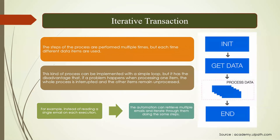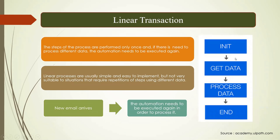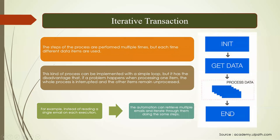In the iterative process, you initialize and get all the data at once. For example, instead of one email you have 10 emails — you read all 10 emails together, then process them one by one, and then end the process. The disadvantage is: if you are processing and get an exception on the fifth email, items six through ten all fail as well.